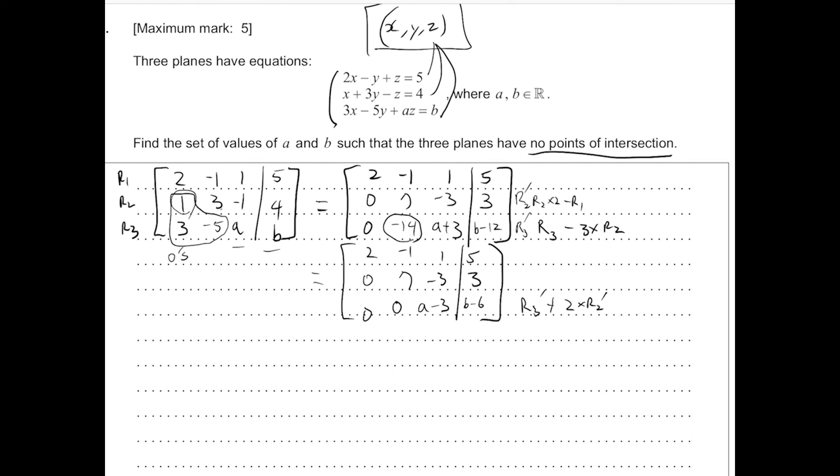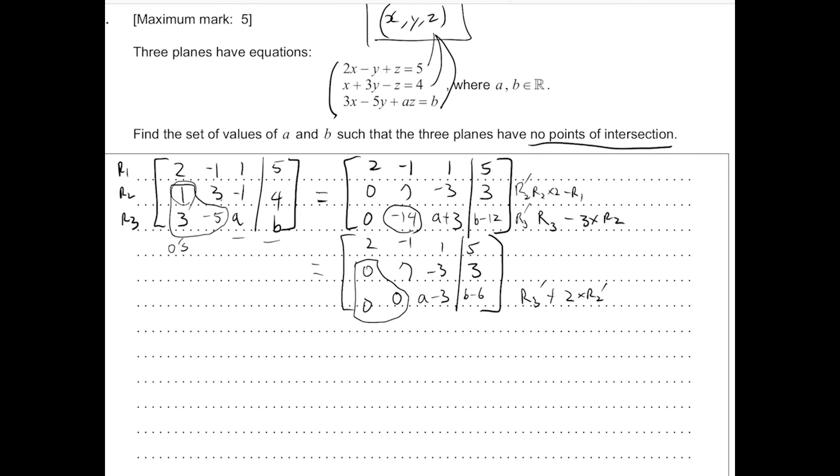So this is the reduced echelon form, where these entries are 0. And currently, we have something like, in the final equation, A minus 3 times Z equals B minus 6. And using this, we'd find a single Z value, substitute it in here to find the Y value, and then here to find the X value.